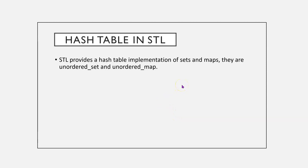Now, in STL, there is a hash table implementation of sets and maps. They are unordered set and unordered map. But, since we're talking about how they work, we're not going to go into that. So, now, we'll go into a little demo.